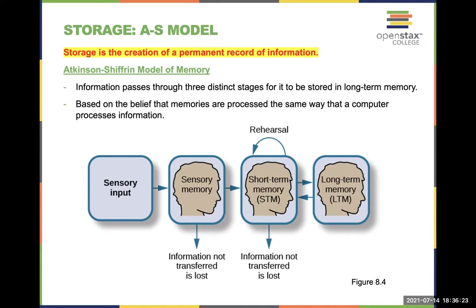Sensory information that is kept moves into short-term memory. This is where rehearsal comes in — like if you're trying to remember a phone number. Studies show that in short-term memory we can hold onto about seven items. If somebody gives you their phone number and you don't have paper to write it on, you might repeat it over and over again — for example, 867-5309. For you older folks, you'll know that's Jenny's phone number. Any information at this point that is not transferred gets lost, but with rehearsal, it has an opportunity to go into long-term memory. You'll notice that between short-term and long-term memory there are two arrows going back and forth — so information can go bilaterally.